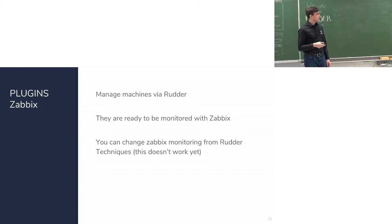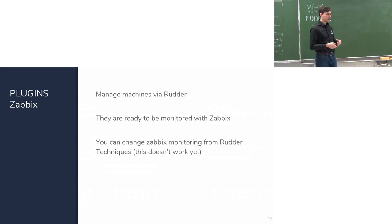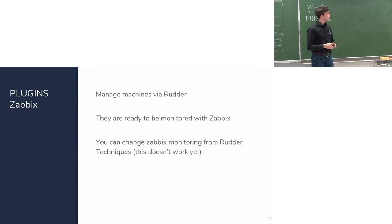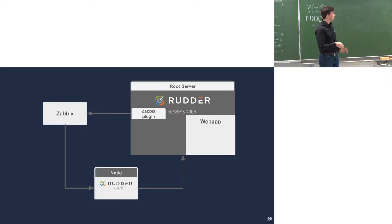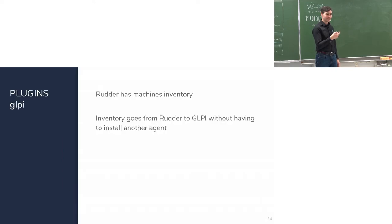The same can be done with Zabbix: you can manage and monitor machines in Zabbix via Rudder. Rudder adds the machines to Zabbix and assigns templates from Rudder. We don't yet have Rudder directive monitoring in Zabbix — that part is neither on our side nor theirs to develop right now.